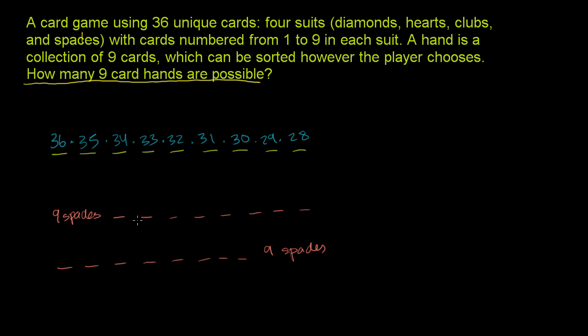If we were thinking of these as two different hands because we have the exact same cards but they're in different order, then what I just calculated would make sense because we did it based on order. But they're telling us that the cards can be sorted however the player chooses, so order doesn't matter. We're over-counting. We're counting all the different ways that the same number of cards can be arranged. So we have to divide this by the ways in which 9 cards can be rearranged.